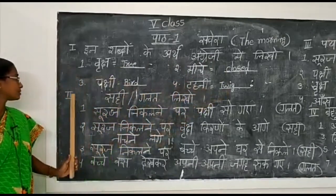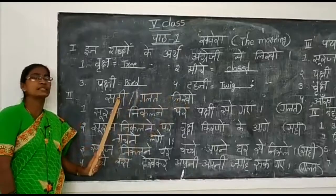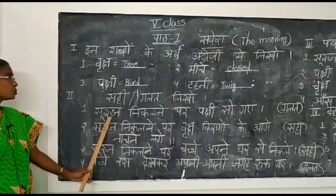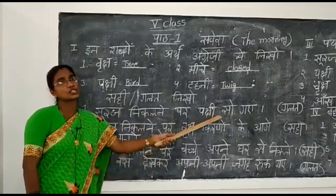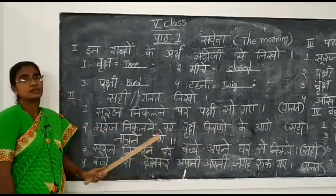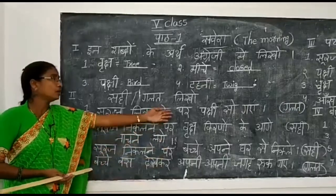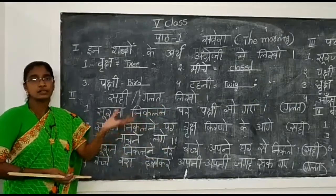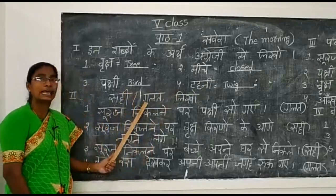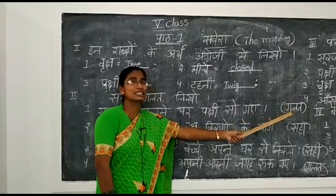Next, Roman number two: 'Sahi galat likho' - meaning write true or false. 'Sahi' means correct or true, 'galat' means false or wrong, 'likho' means write. First sentence: 'Suraj ni kalne par pakshi so gaye.' When the sun rises, do the birds sleep? No, that is wrong. This sentence is false, galat.